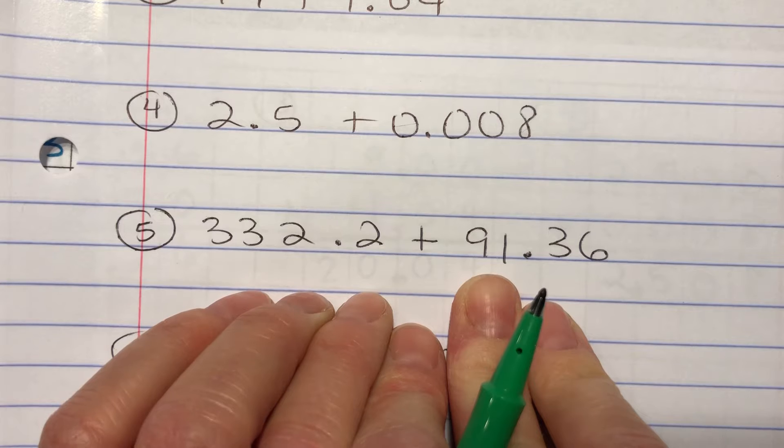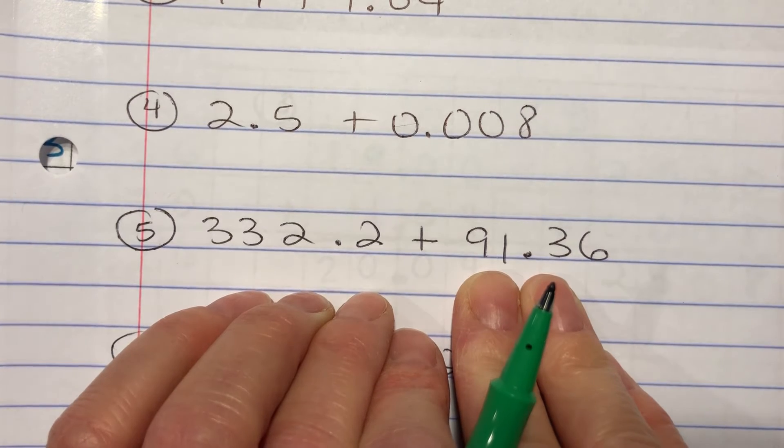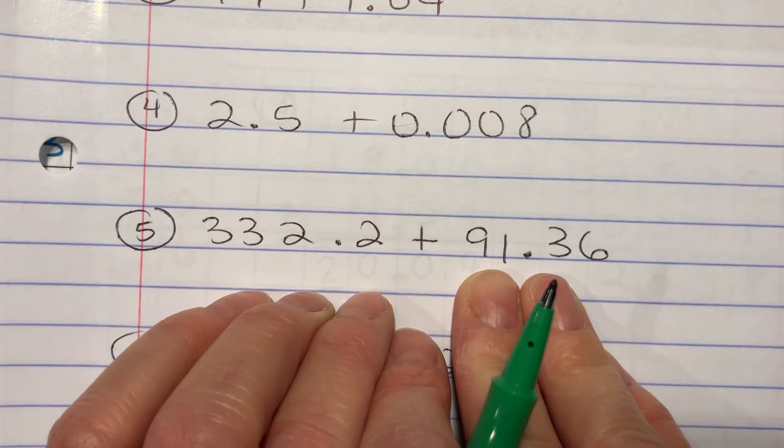Right here. Three hundred thirty two and two tenths plus ninety one and thirty six hundredths. So press pause so you have this screen. Solve this problem on your little dry erase board. And then press play to see the answer.